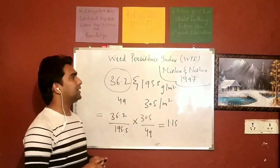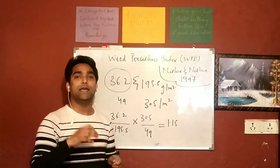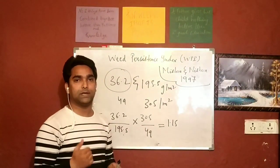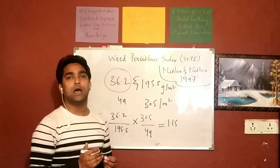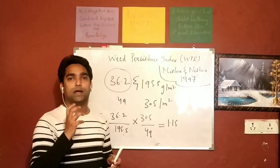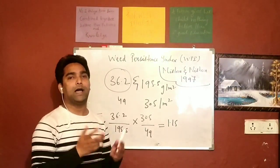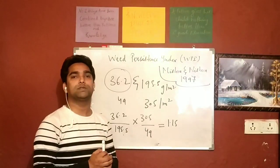So I hope it is clear. Today we have discussed the weed persistence index and the inferences. If there are lower values, then it will be better for you because that particular weed control shows its effectiveness. If there are higher values, then it means that weeds resist that particular method.